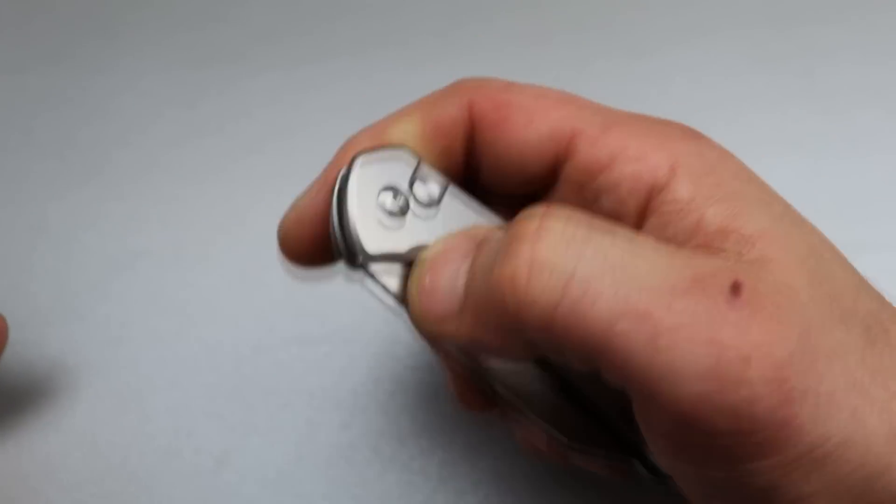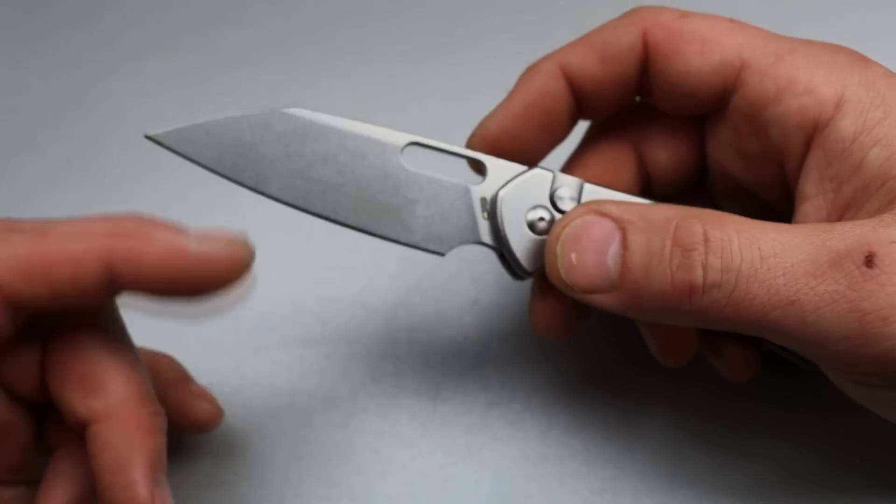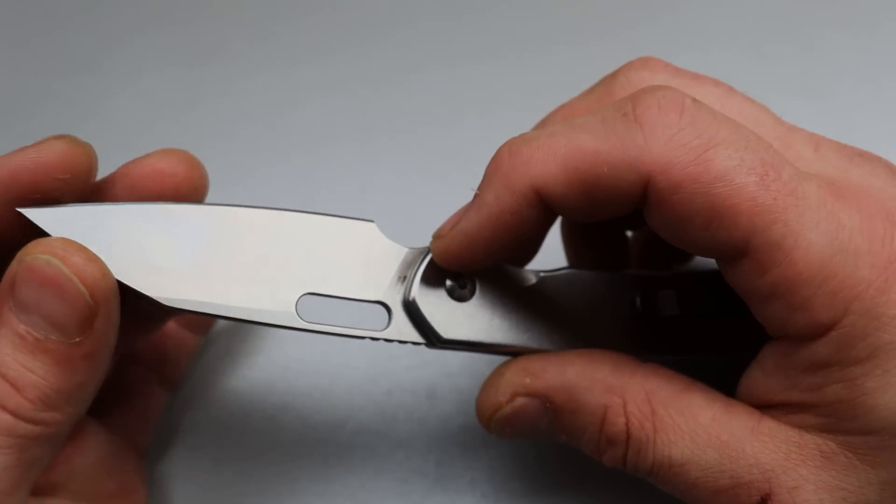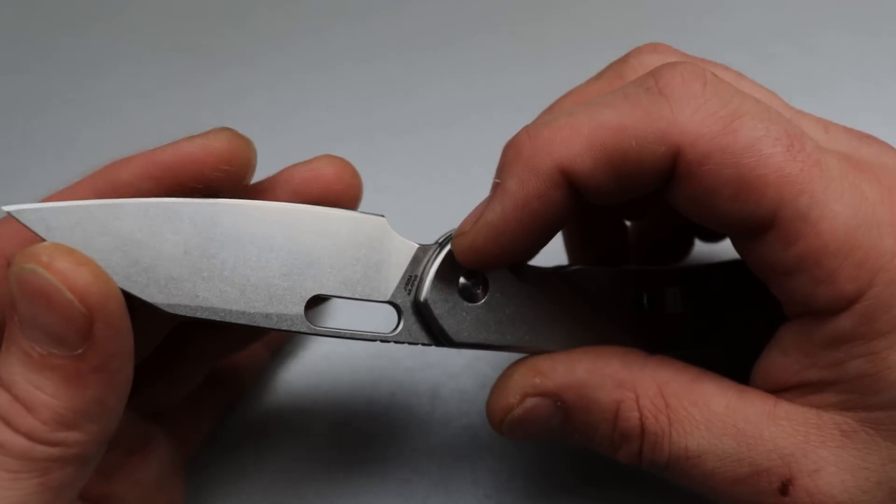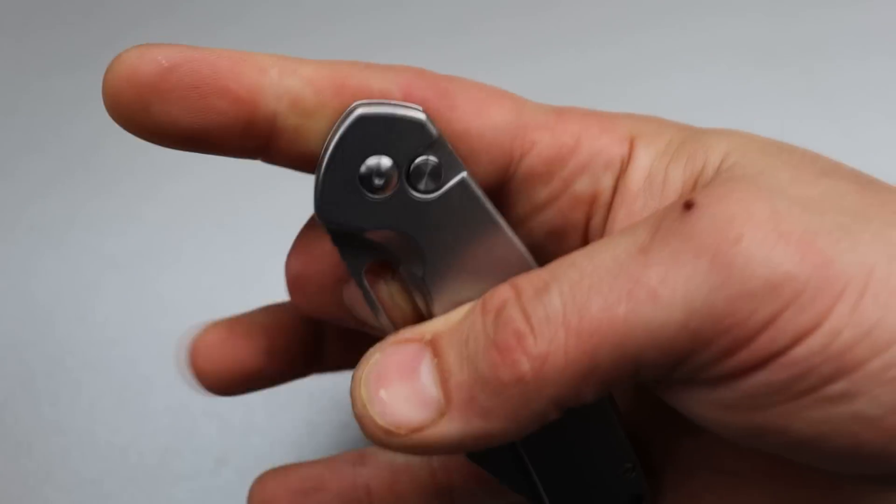And the one thing that it really shines at is its strop ability. So when you're maintenancing your edge and you're keeping an edge going, you can keep an edge going for a long time on AR-RPM9 steel because of its ability to strop back.